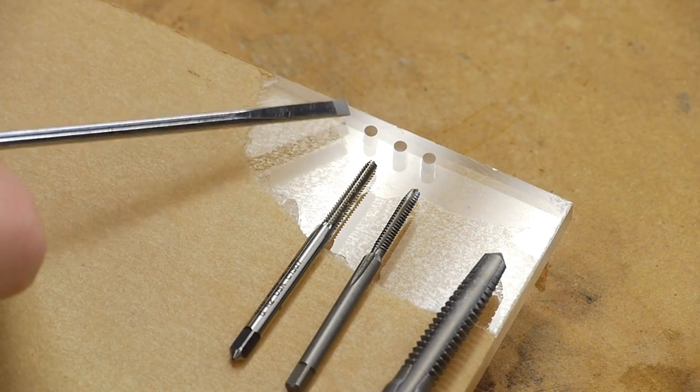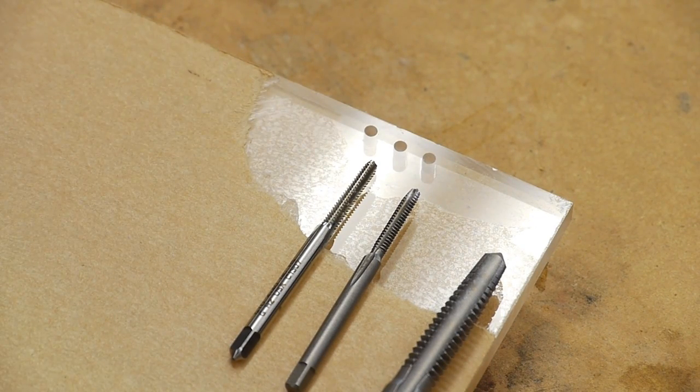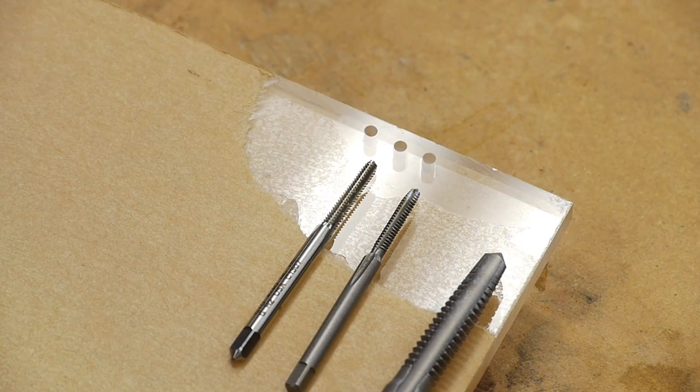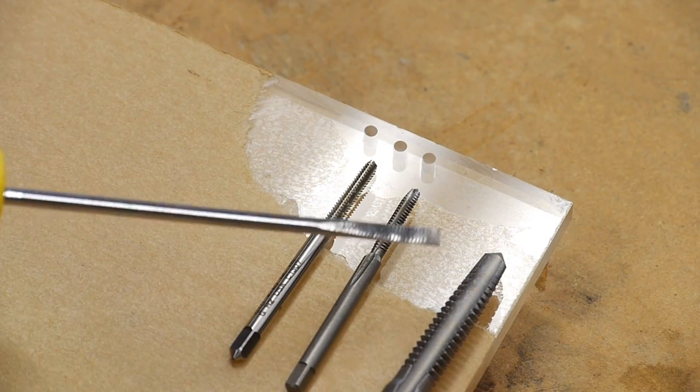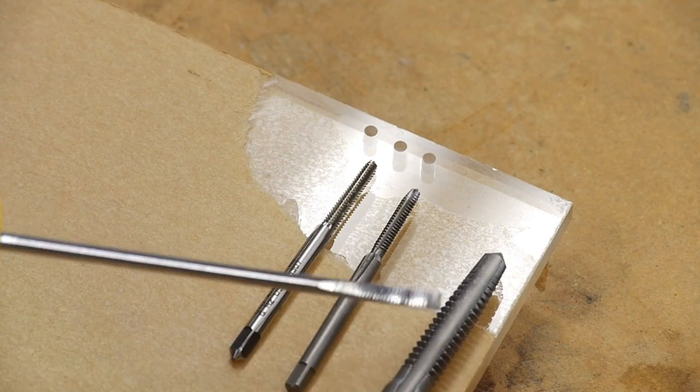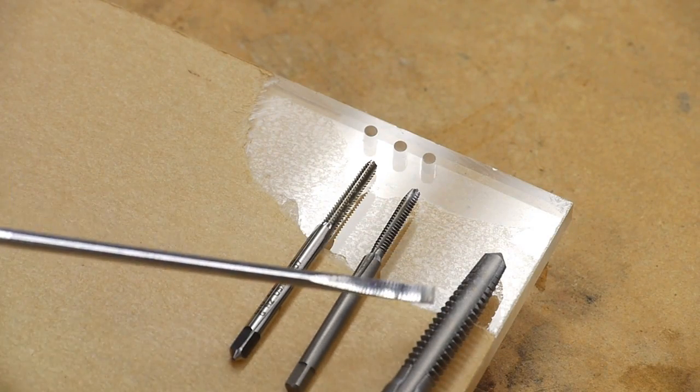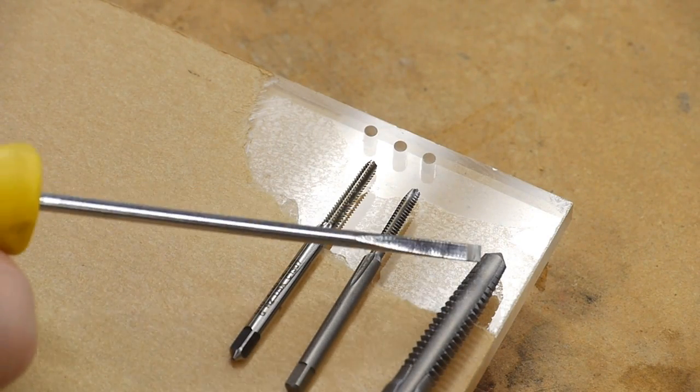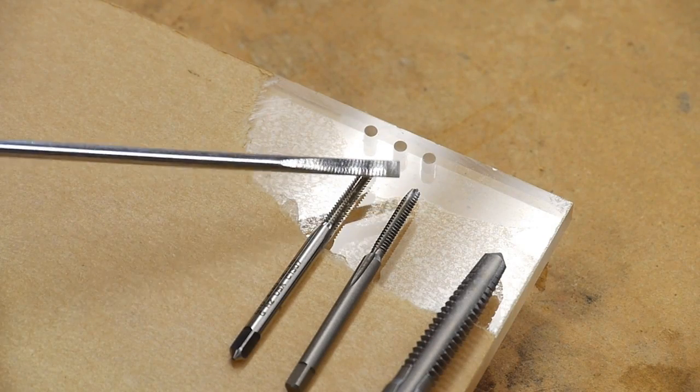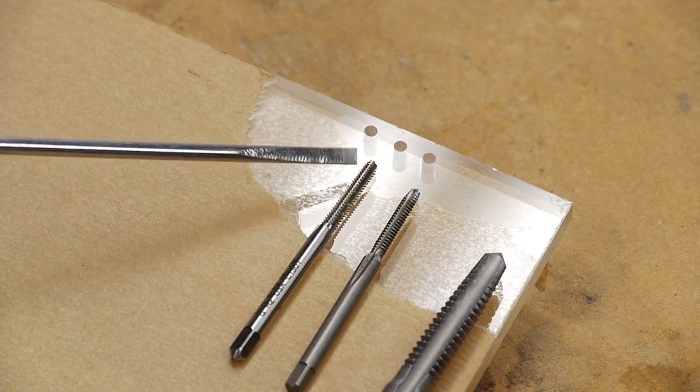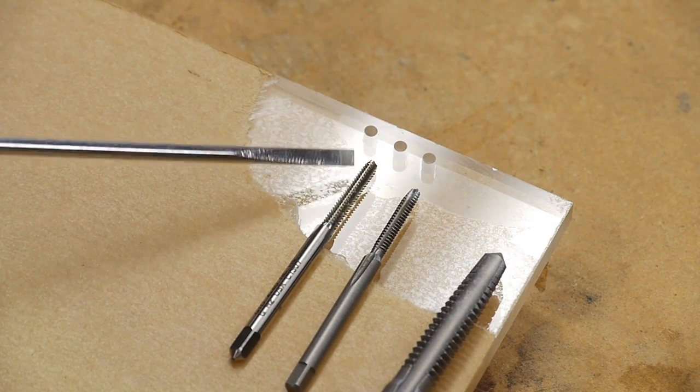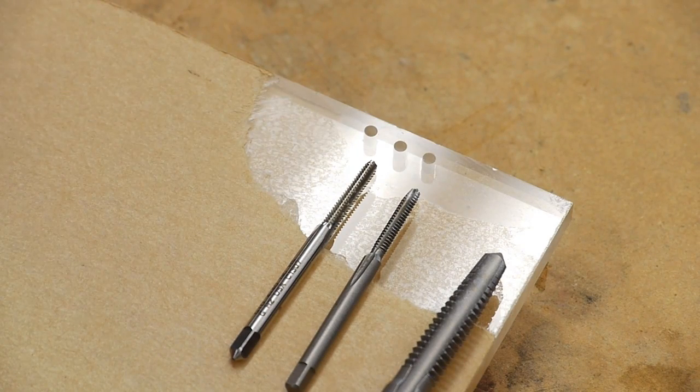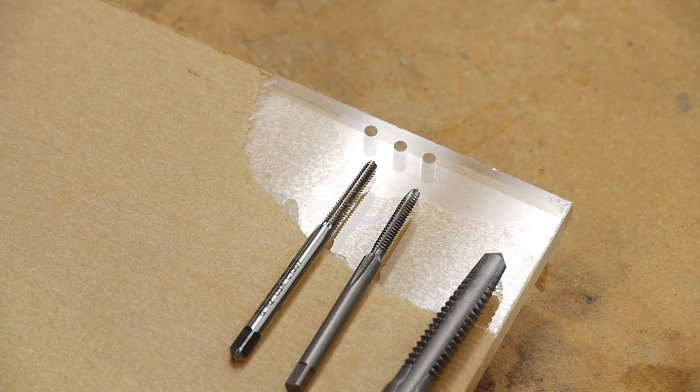If you're going to put threads into a hole that you just drilled into material, you'll need a tap. There's three basic kinds of tap: there's a taper tap where the tool has about seven or eight of these cutting threads tapered down to the tip, there's a plug tap that only has three or four threads tapered, and there's a bottoming tap that only has one or two threads tapered.